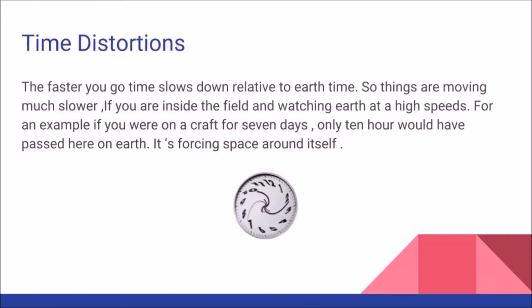Time distortions: The faster you go, time slows down relative to earth time, so things are moving much slower if you're inside the field and watching earth at a high speed. For example, if you were to leave on a craft for 7 days, only 10 hours would have passed here on earth. It's focusing space around itself. So if I was to leave now, I'd be back in 10 hours. It would seem like 7 days.